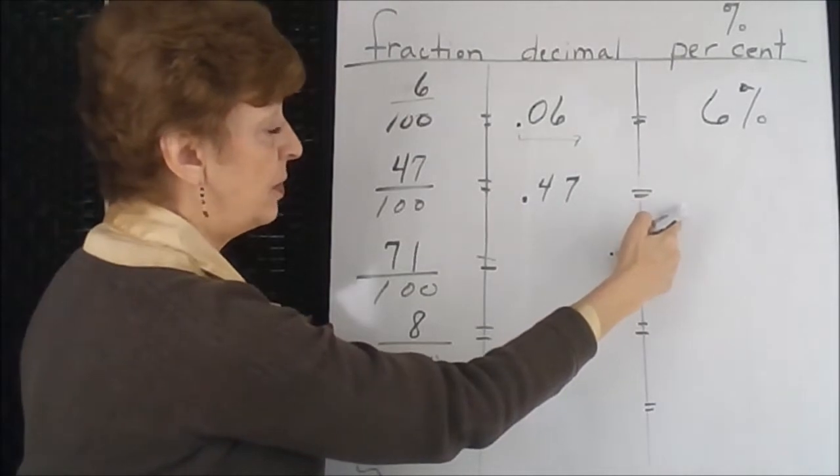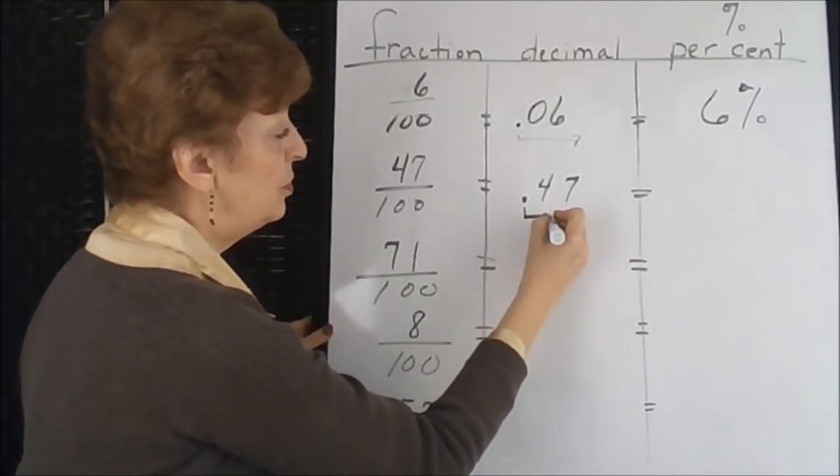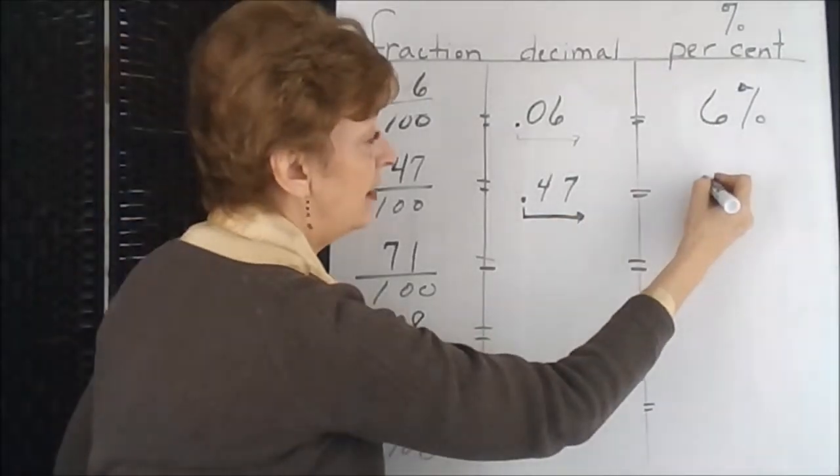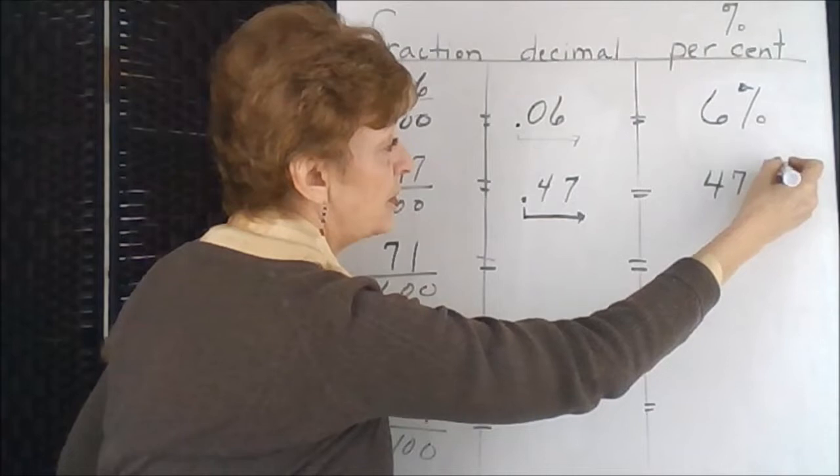Changed to a percentage, the decimal place would move two places over to the right, and then we would write forty-seven percent.